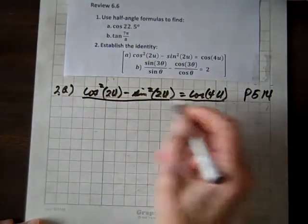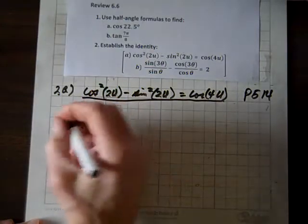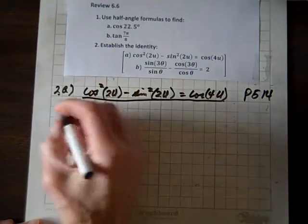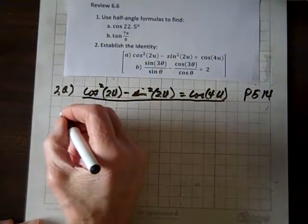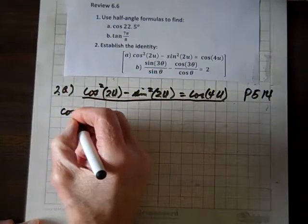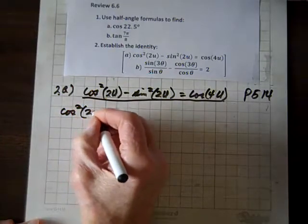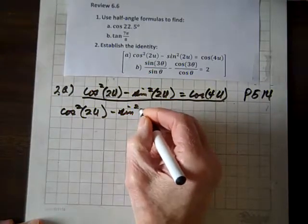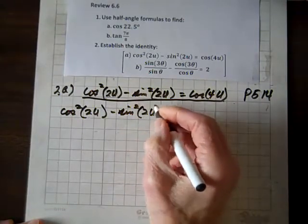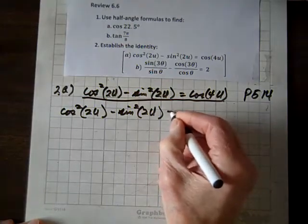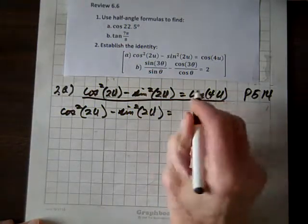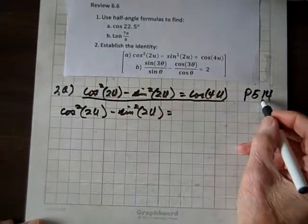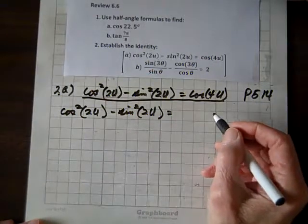When we establish an identity, we'll write the most complicated side, which happens to be the left side. We'll write that down: cosine squared 2u minus sine squared 2u equals — and now let's expand this using the identities on page 514.